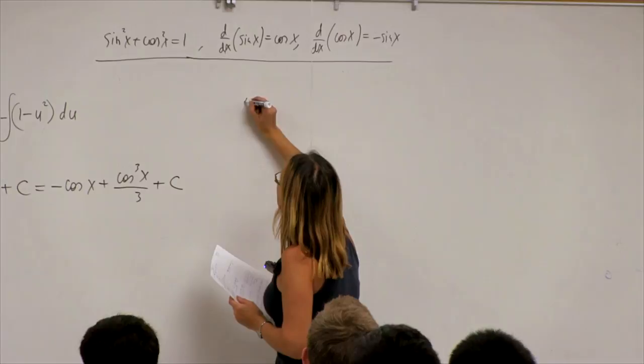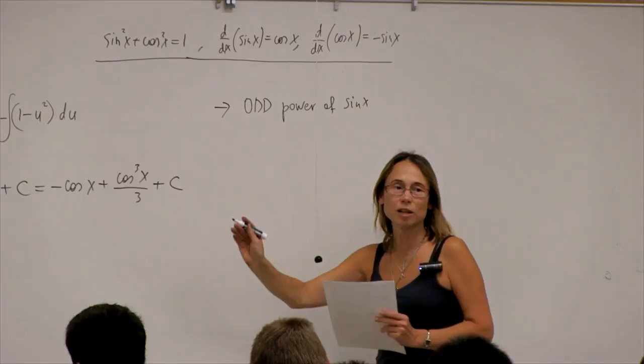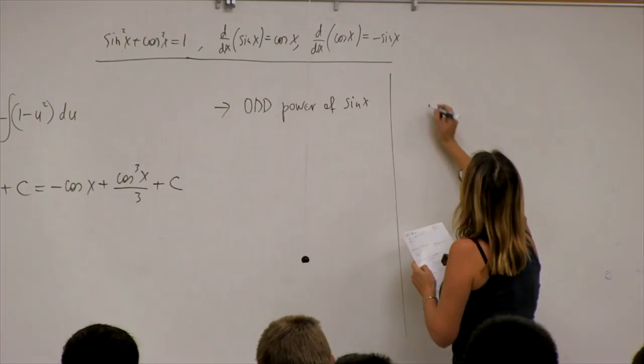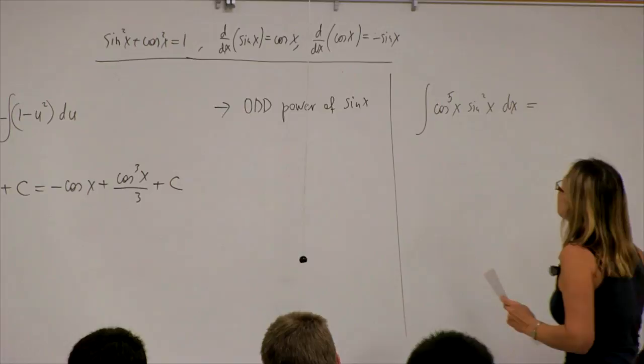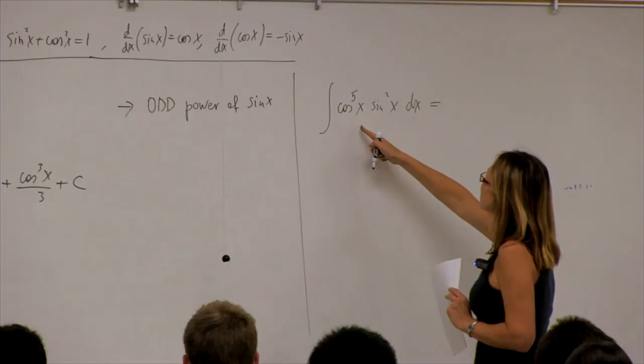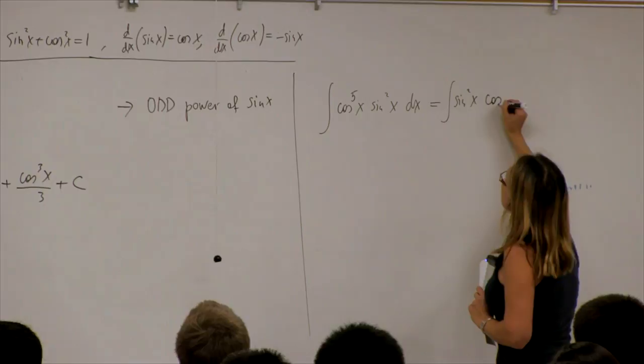Let me show you the next example to make this clear. Let's look at the integral of cosine to the fifth x times sine squared x dx. Now I'm going to split off one power of cosine, so I have sine squared x, one power of cosine goes to the differential: cosine fourth x times cosine x dx.